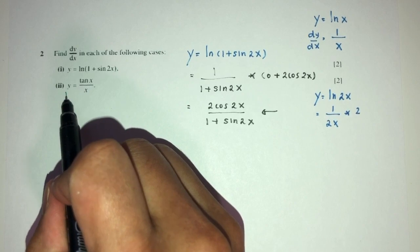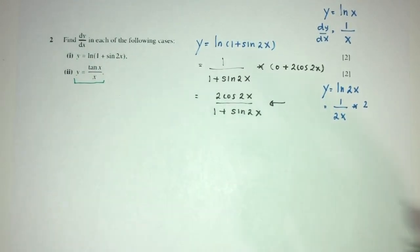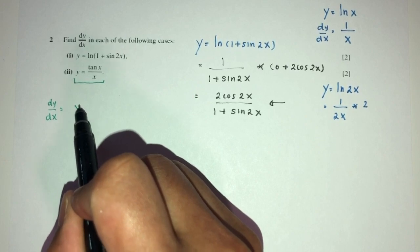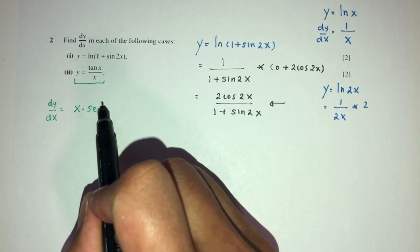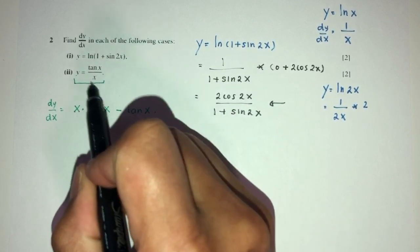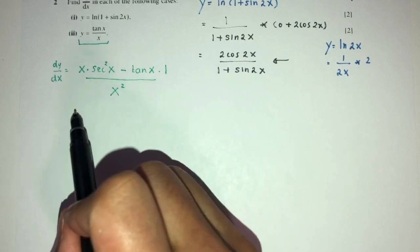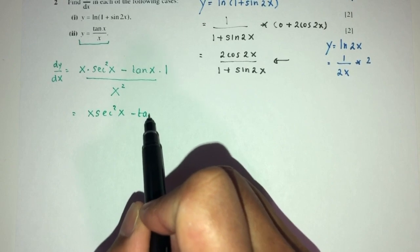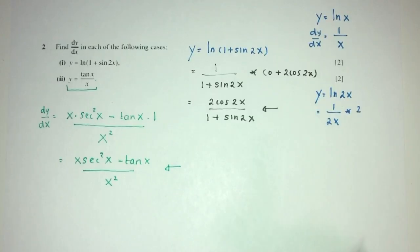For part two, we have a fraction so we use the quotient rule. dy/dx will be: the numerator x, as is, times d/dx(tan x) which is sec²x, minus tan x times d/dx(x) which is 1, all divided by the base squared, x². So the result is (x sec²x minus tan x) over x².